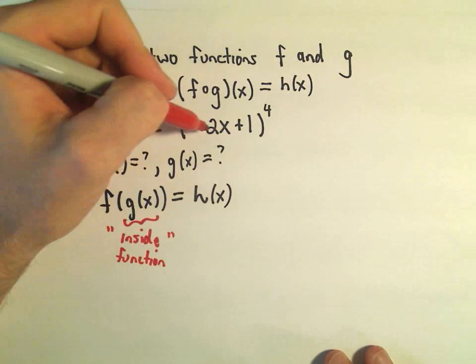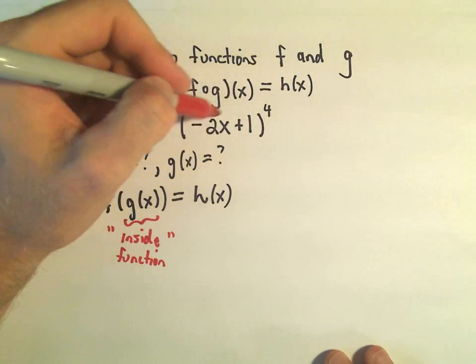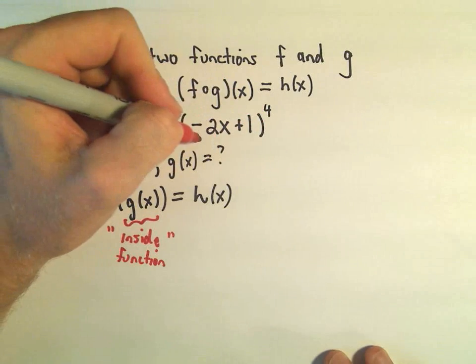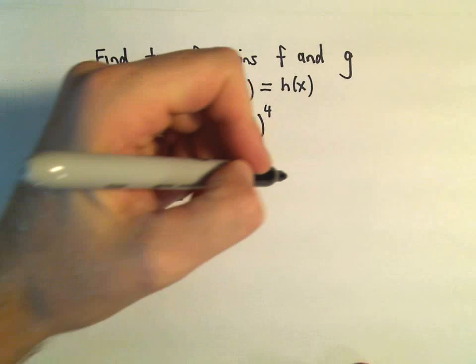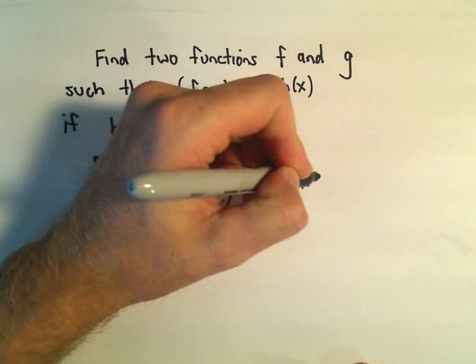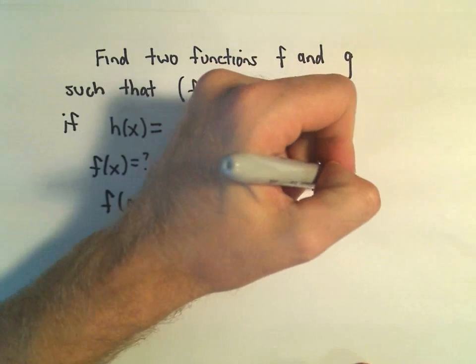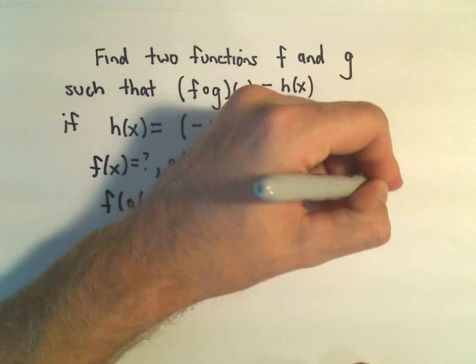And if I look at this problem, to me I see something inside being raised to the fourth power. Notice the thing inside is -2x + 1. So I think we could let g(x) equal the stuff on the inside, -2x + 1.